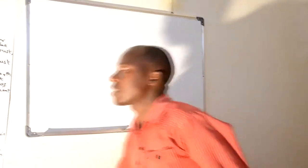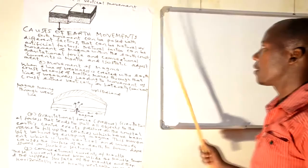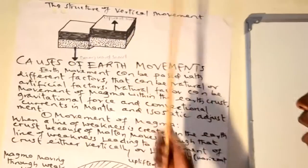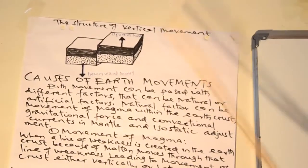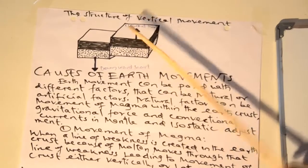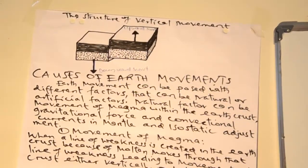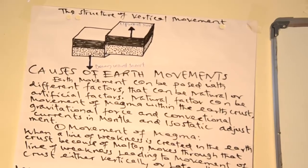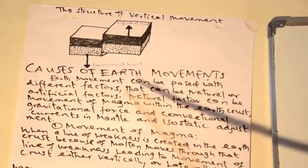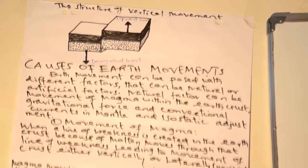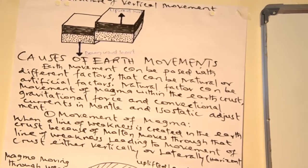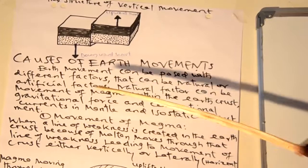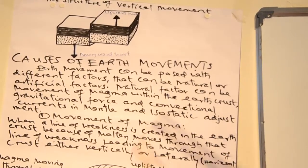For instance, this is a structure illustrating the movement of the earth in terms of vertical. This is uplifted, whereby the material within the earth's crust is just pushing upwards, causing the formation of hills or mountains depending on shape. But wherever this material moves downwards, it can cause the formation of a basin or depression. There are different causes of earth movement and we have to describe them. Earth movement can be caused by different factors that can be natural or artificial. Whenever we talk about artificial, it is whereby the human being is causing the movement or changing of the landscape.